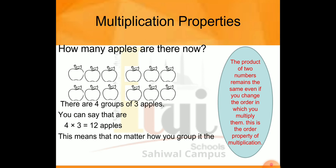This means that no matter how you group it, students, you can see the groups. First, we have 3 groups with 4 apples in each group. In this way, we have 4 groups but in each group we have 3 apples. The grouping changes but the total remains the same.